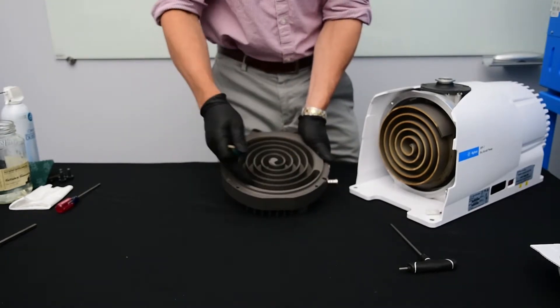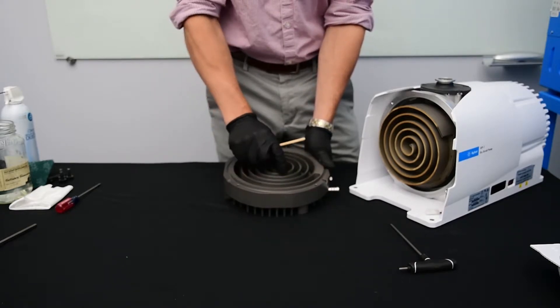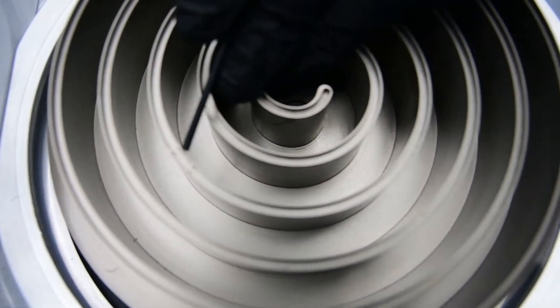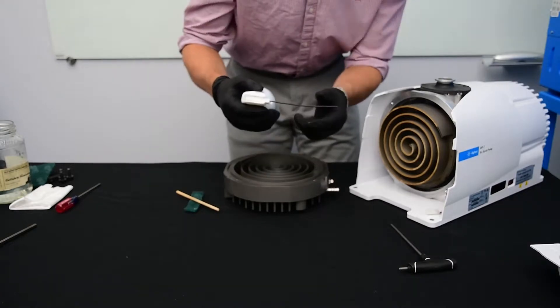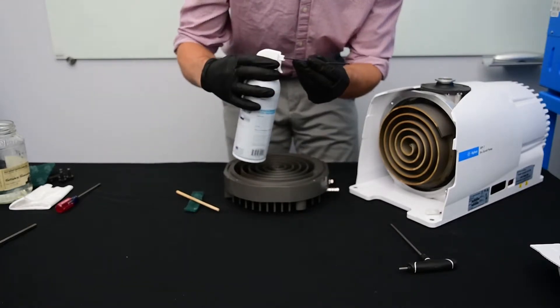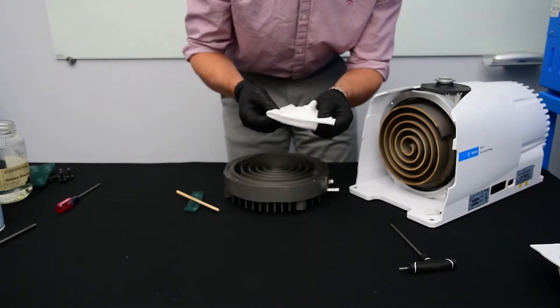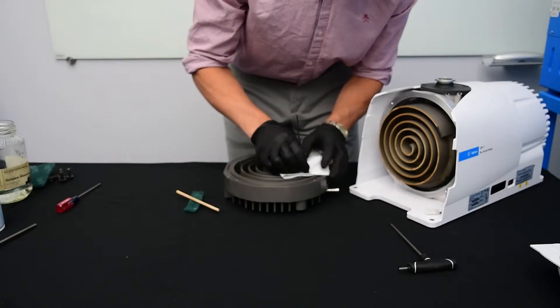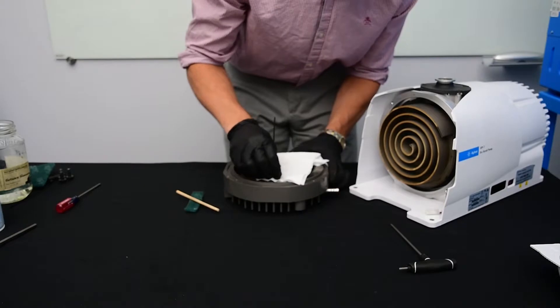Now once you've scrubbed out the inside of the tip seal groove, you're going to want to get in here as well. This dowel is too big, so I'm going to grab the straw from the top of my compressed air can. I'm also going to use my lint free cloth. Now lint free cloths are important. You don't want to use anything such as a paper towel when cleaning a scroll pump.